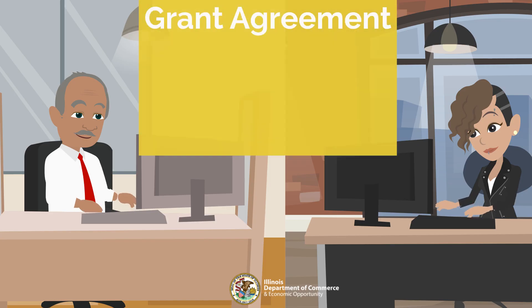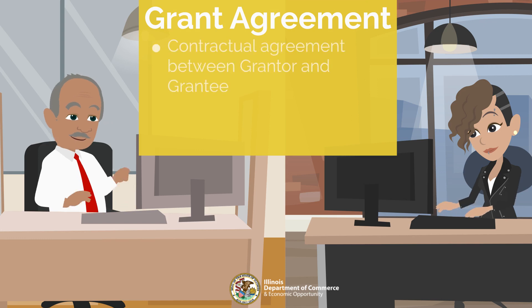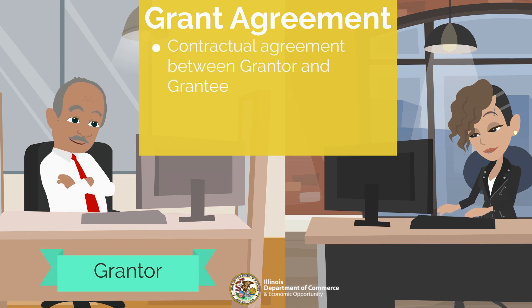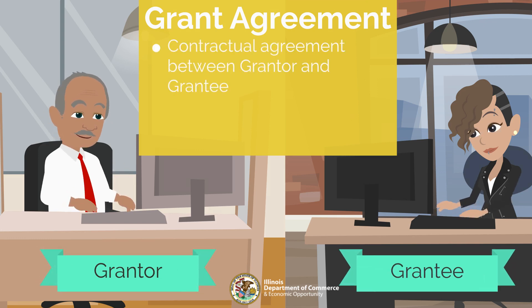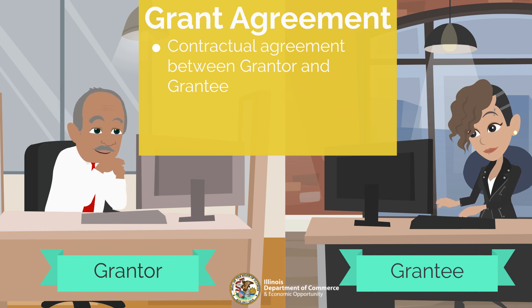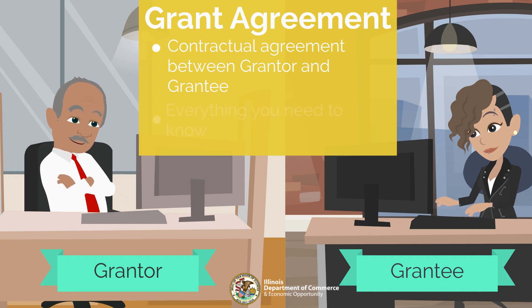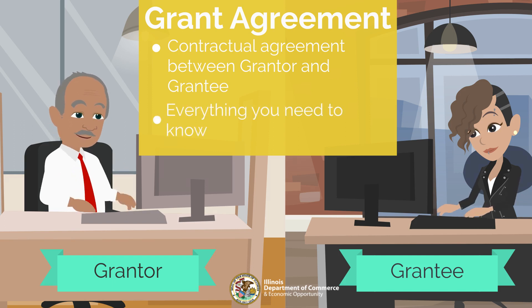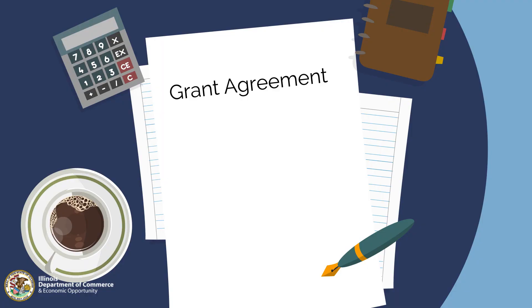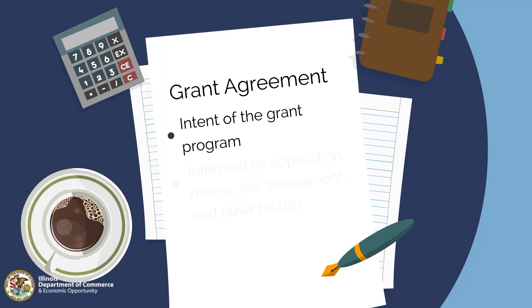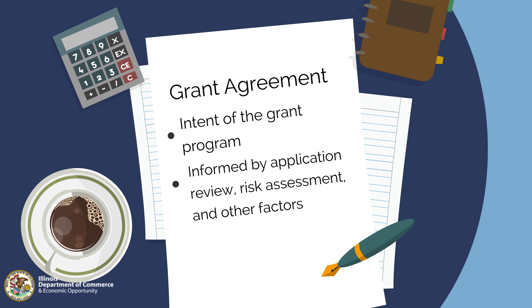A grant agreement is a contractual agreement between a grantor, or funding entity, and a grantee, the recipient of grant funding. This agreement outlines in detail the parameters, requirements, and expectations of both the grantee and the grantor. This document contains everything you need to know about your grant. The grant agreement is built upon the intent of the grant program and is informed by factors that emerge within the grant application review process.